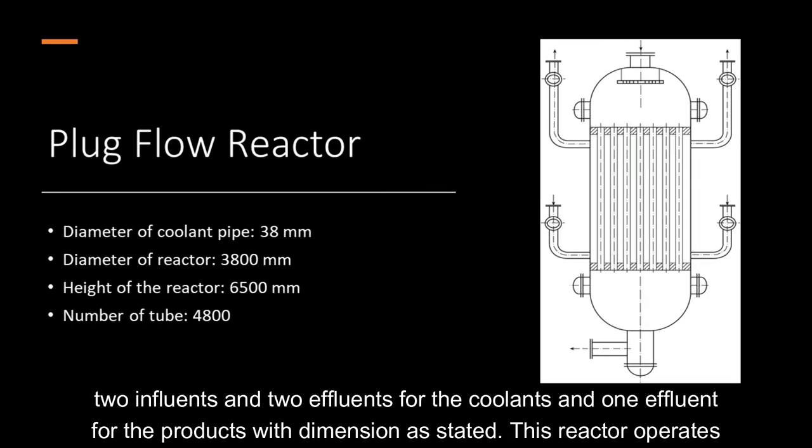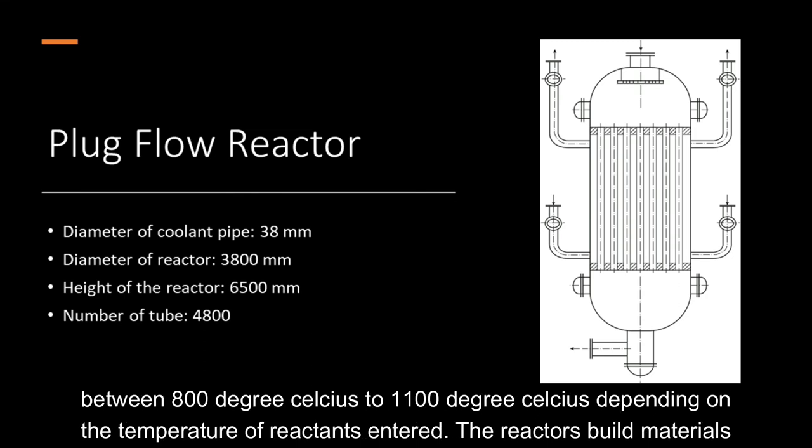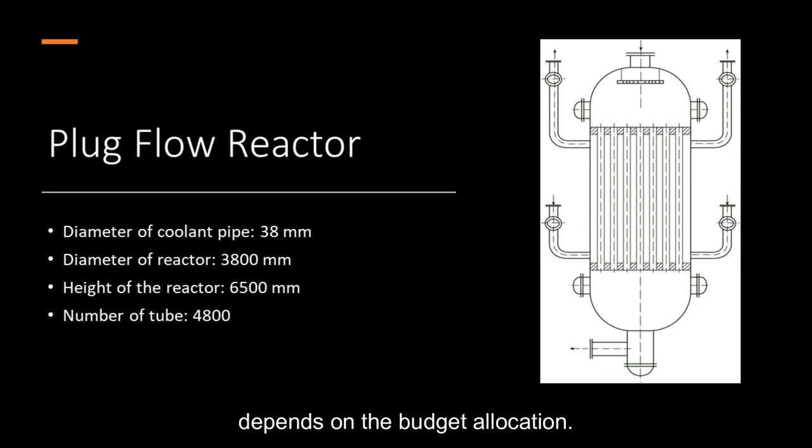It has one influent for the reactants, two influents and two effluents for the coolants, and one effluent for the products with dimensions as stated. This reactor operates between 800 degrees Celsius to 1100 degrees Celsius, depending on the temperature of reactants entered. The reactor build material depends on the budget allocation.